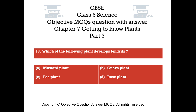Question number 13. Which of the following plants develops tendrils? Option A: Mustard plant. Option B: Guava plant. Option C: Pea plant. Option D: Rose plant.